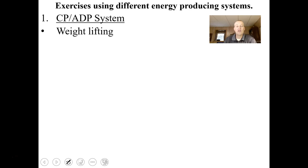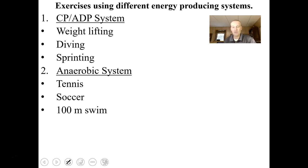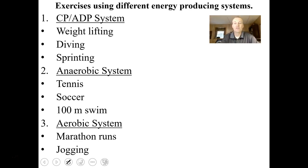The creatine phosphate system is used for weight lifting, diving, and sprinting — short duration but huge contractile force. The anaerobic system is used for tennis, soccer, and 100-meter swims — contractions over longer periods but still under about 30 seconds. The aerobic system is used for marathon runs, jogging, and postural muscles that maintain posture — your posture uses the aerobic system.